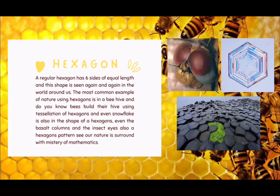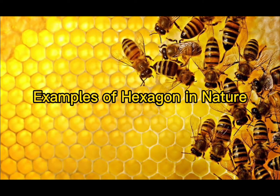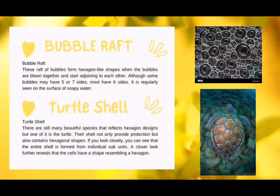Patterns seen in our nature are surrounded with the mystery of mathematics. Rafts of bubbles form hexagon-like shapes when bubbles are blown together and start adjoining each other. Although some bubbles may have five or seven sides, most have six sides, and this is regularly seen on the surface of soapy water. There are still many beautiful species that reflect hexagonal designs, but one of them is the turtle.